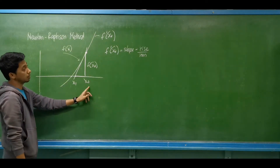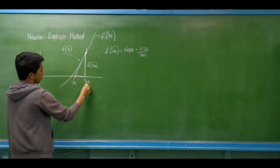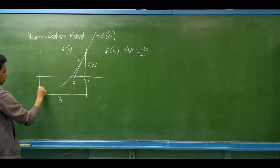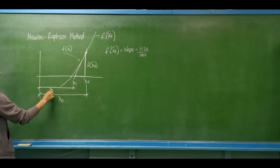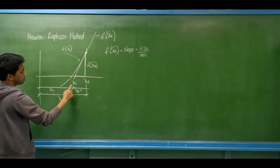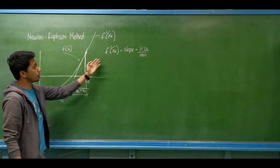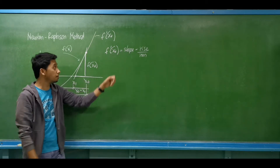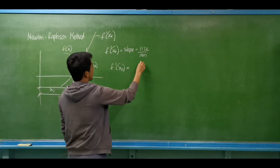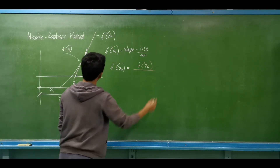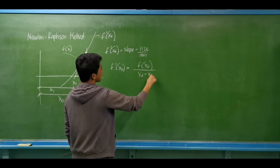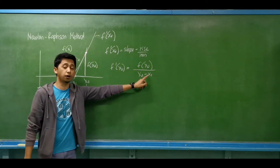We need to identify the run. Observe the length of the line from the y-axis to x sub 0 — that is x sub 0. From the y-axis to x sub 1, that is x sub 1. So this distance from x sub 0 to x sub 1 is the same as x sub 0 minus x sub 1. So the first derivative equals slope, which is rise over run. We are computing for x sub 1.